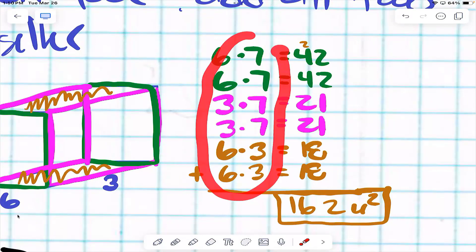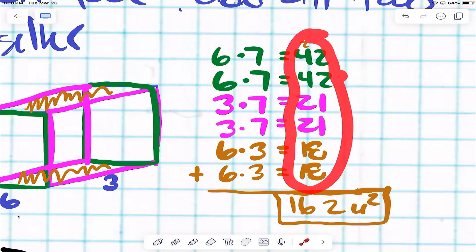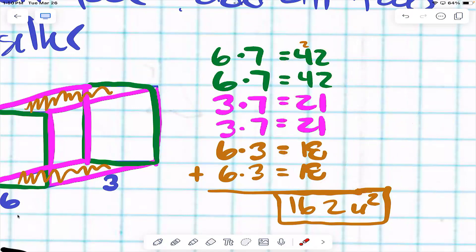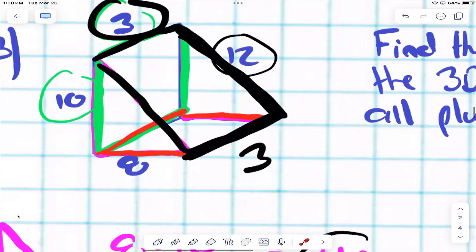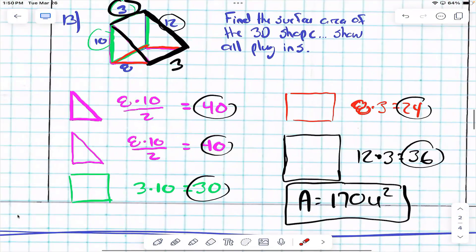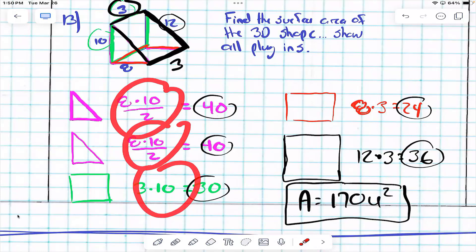What are these called here where we put all those numbers in? Plugins. And then these are the answers to our plugins. If you add all those together, that's your surface area, right? Trying our, I'm sorry, this shape. How many faces does this shape have? Five. How many plugins do I have? Five. Five shapes, five plugins, right?